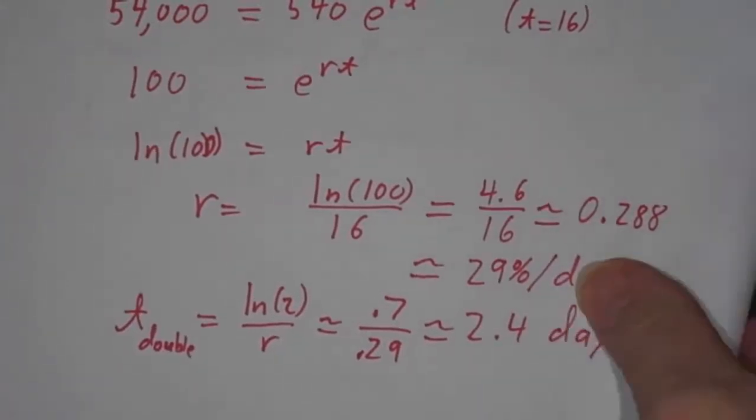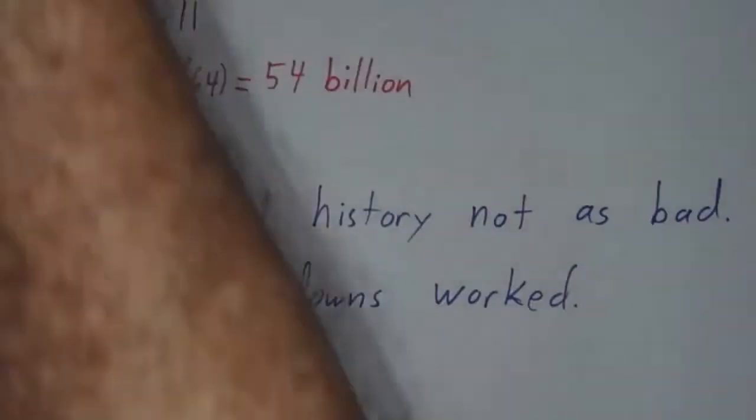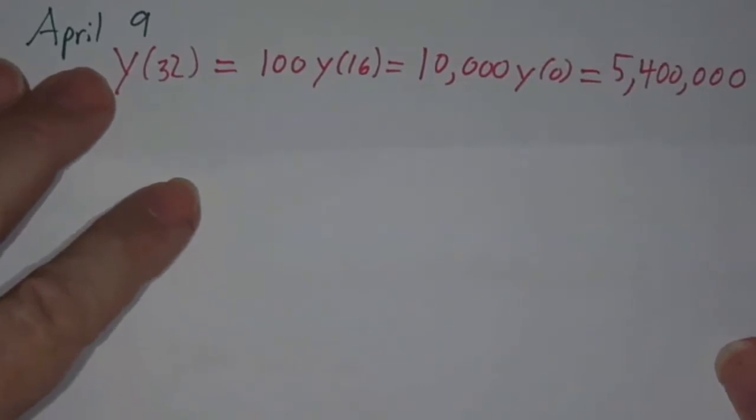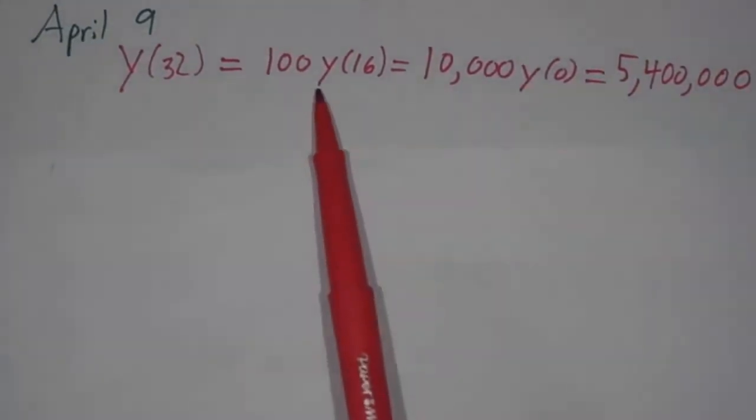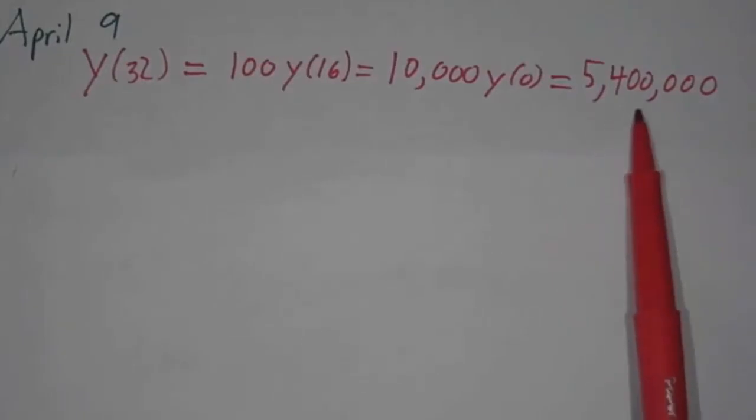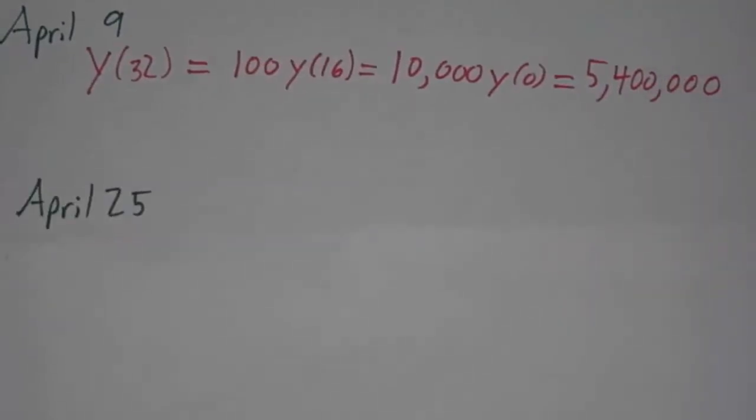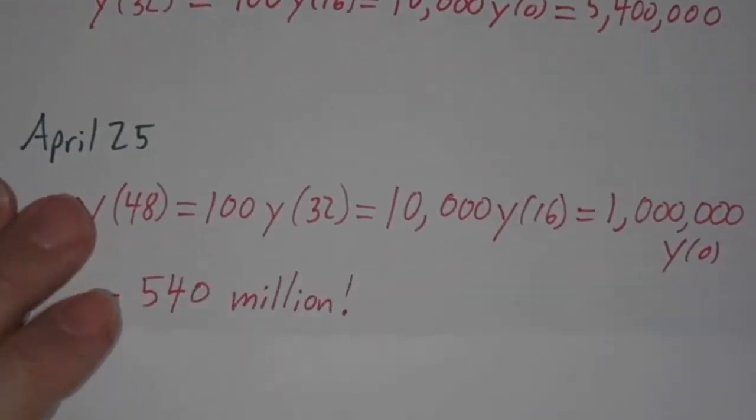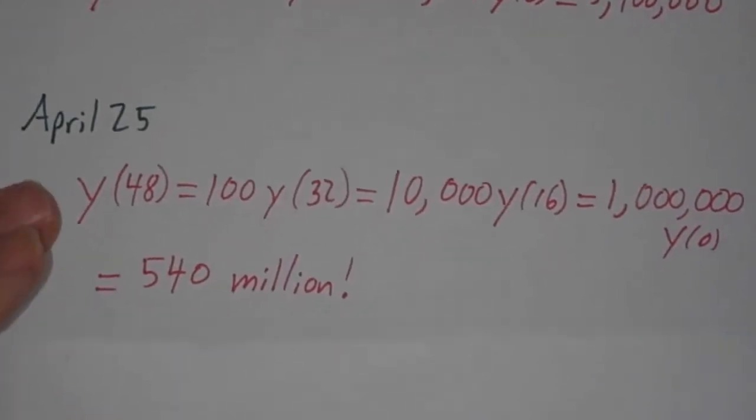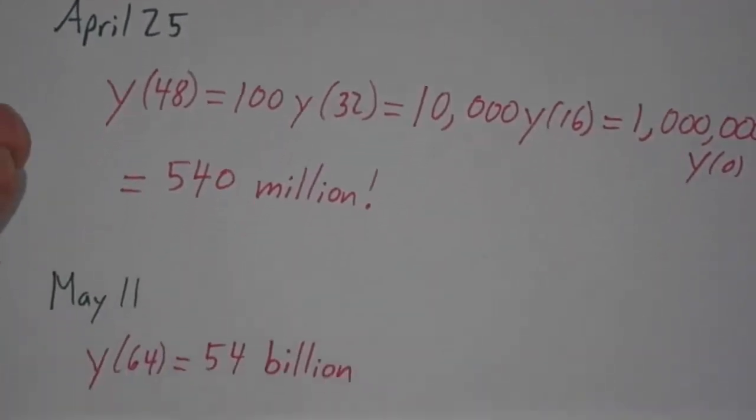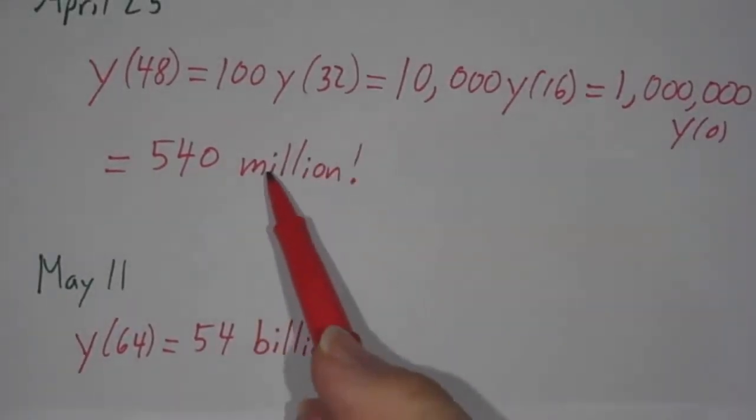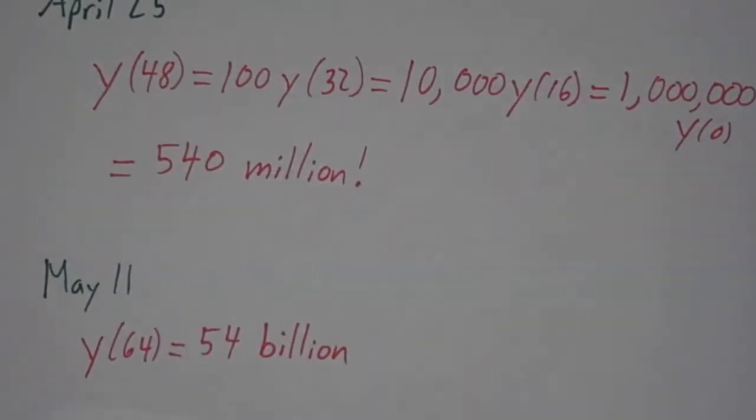Now, if that continued, we multiplied by 100 in 16 days, and in another 16 days we would have had 100 times that, we would have had 5.4 million. In another 16 days, we would have had 100 times that, we would have had 540 million. In another 16 days, we would have had 100 times that, which is 54 billion. Now, that's obviously nonsense. This is more than the entire population of the United States. This is seven times the entire population of the world.